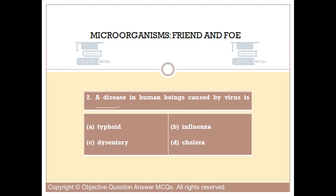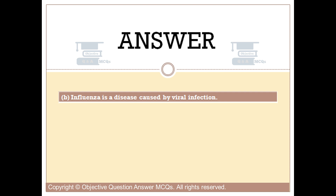Question number two. A disease in human beings caused by a virus is blank. Option A: Typhoid. Option B: Influenza. Option C: Dysentery. Option D: Cholera. The right answer is option B. Influenza is a disease caused by viral infection.